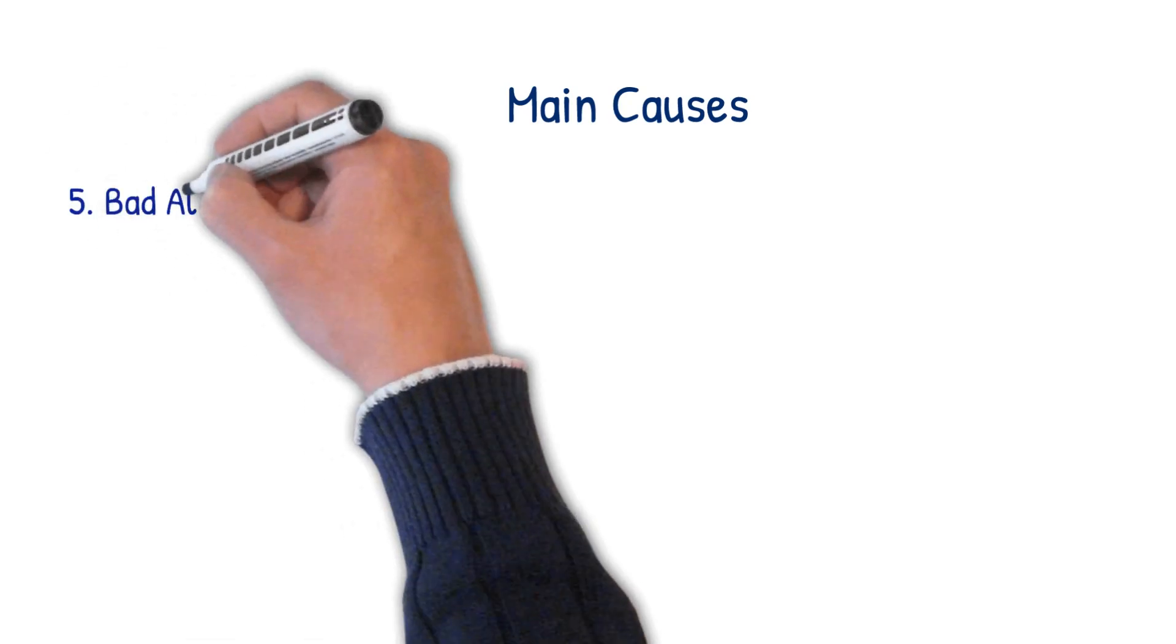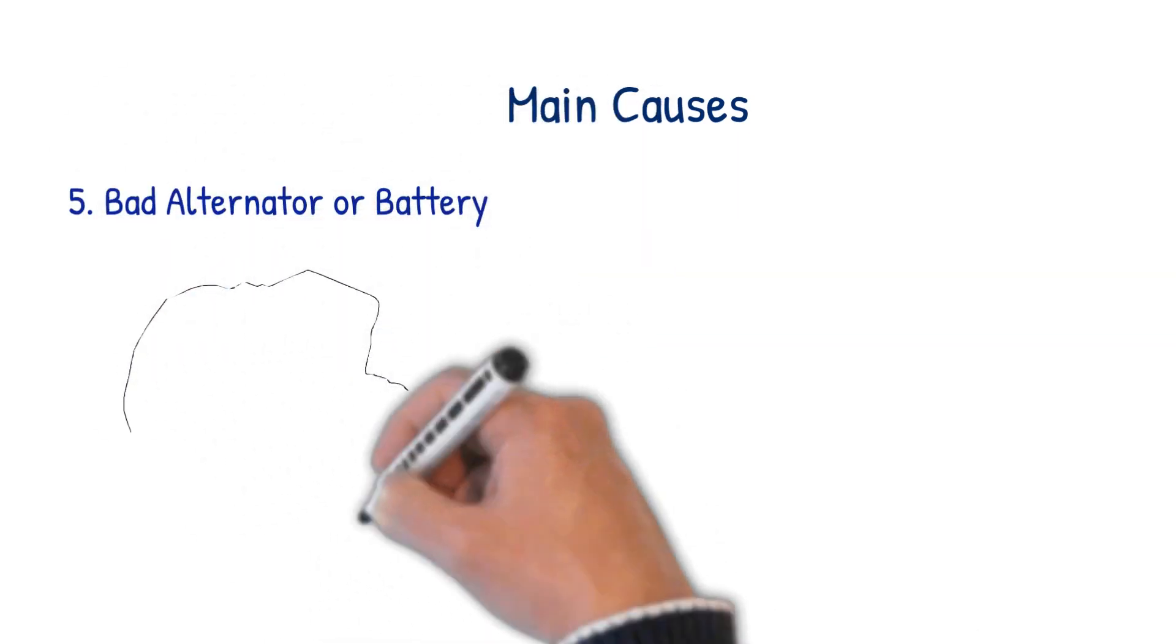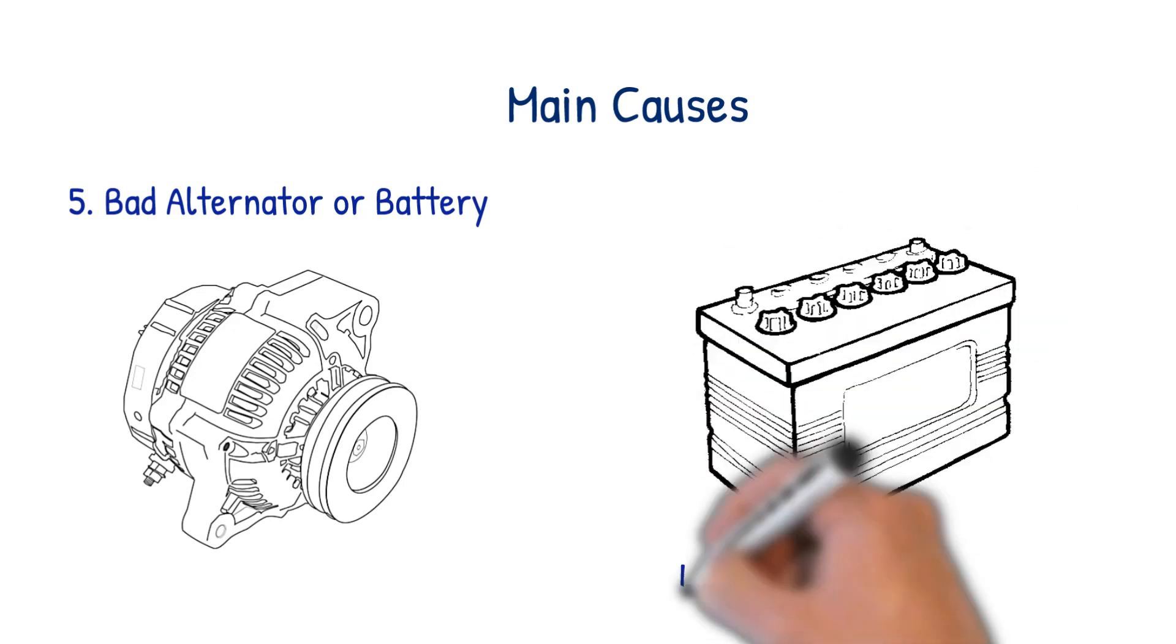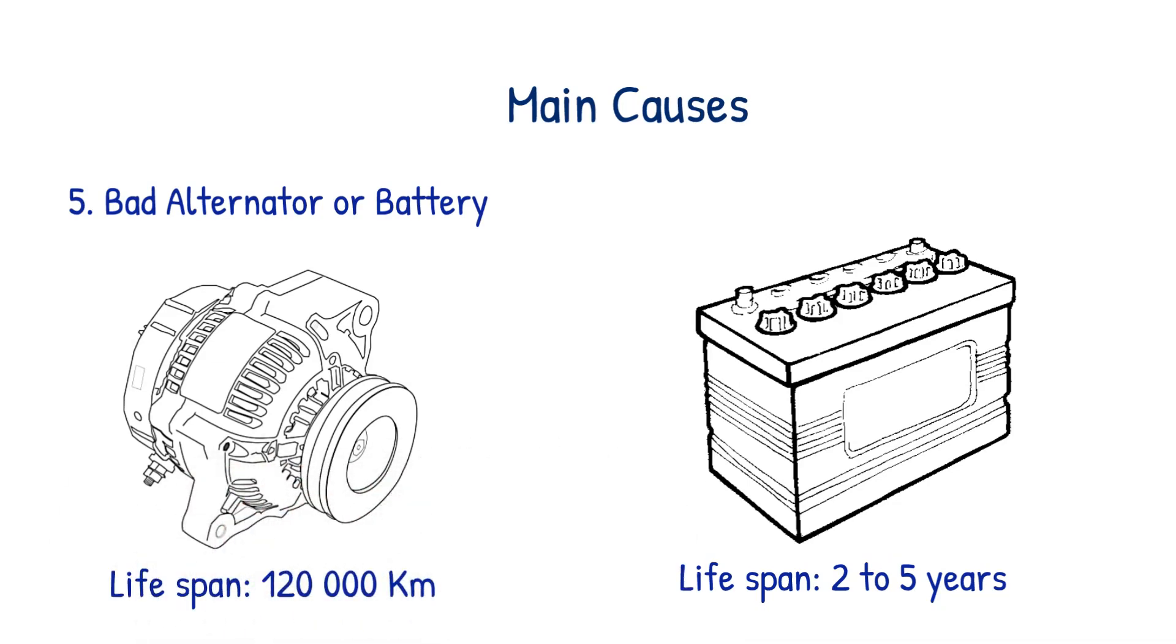Alternators and batteries do not last forever, and each has its lifespan. A car battery will last from 2 to 5 years, depending on how often you drive the vehicle and the climate where you live. Batteries generally last longer in colder environments and shorter in hotter environments. Alternators will last about 7 years or 120,000 km.